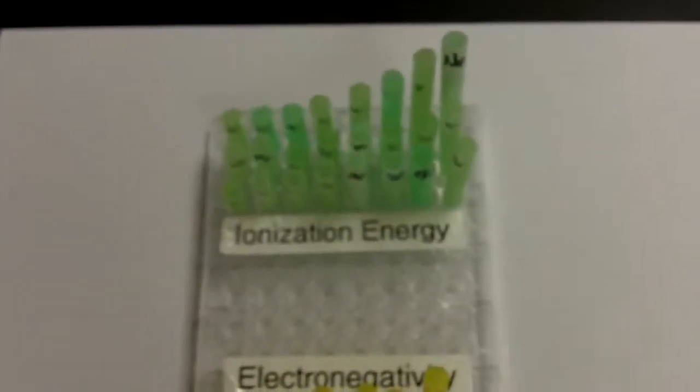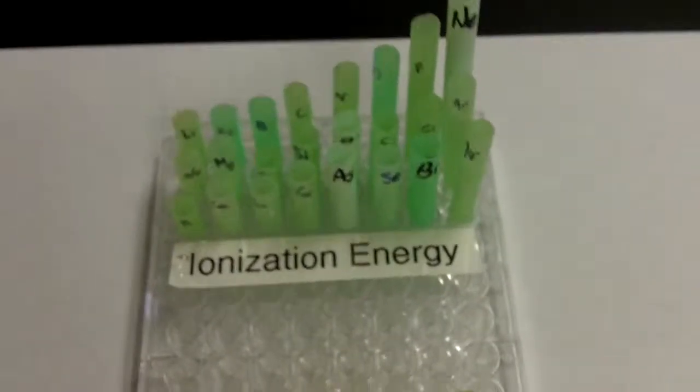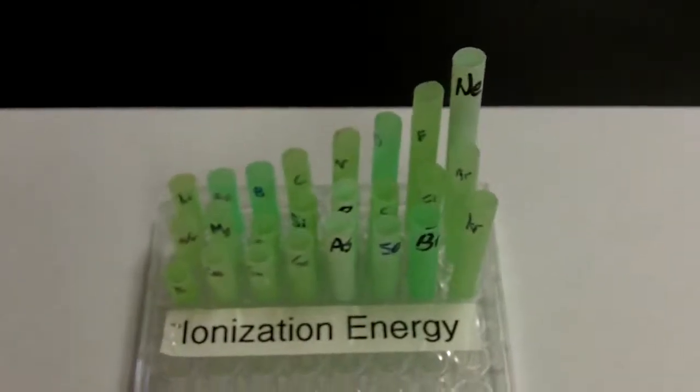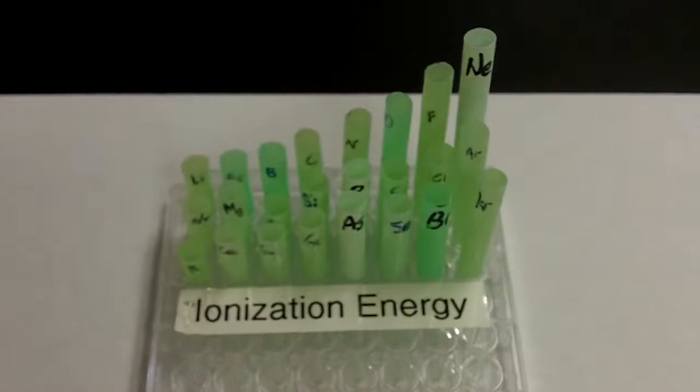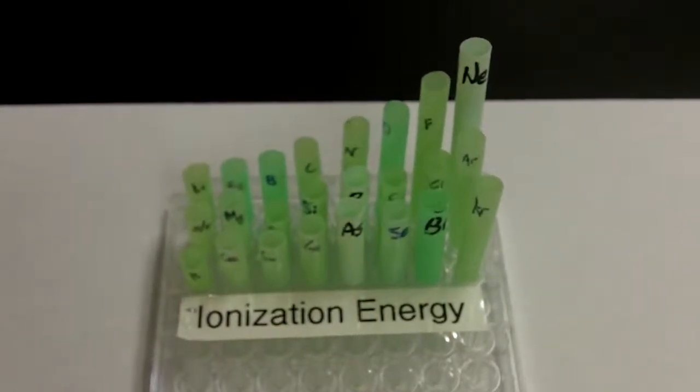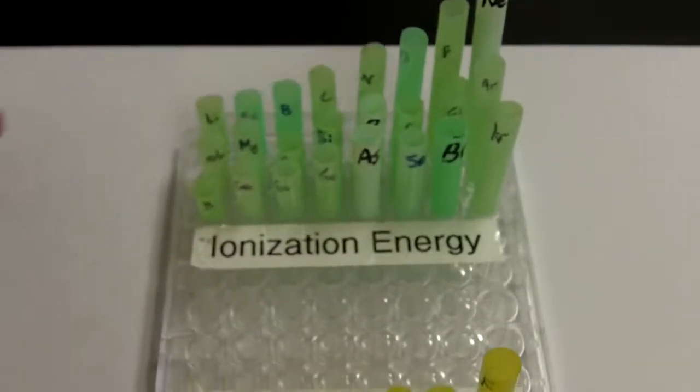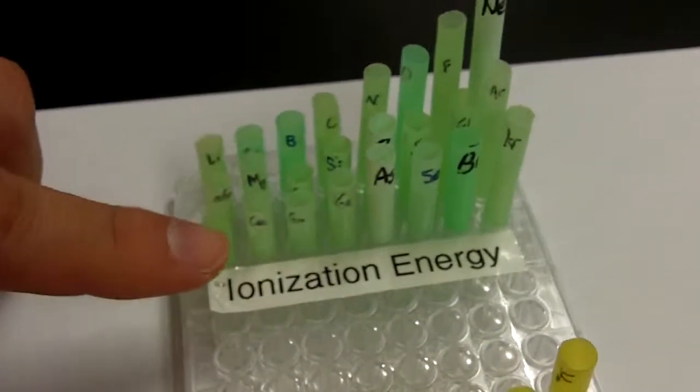Okay, so we're going to take a look at this first model here, showing ionization energy. Remember, ionization energy is the energy required to remove an electron. And what we see over on this side here, the way this is arranged, this first column here, these are the alkali metals.